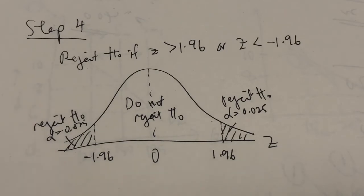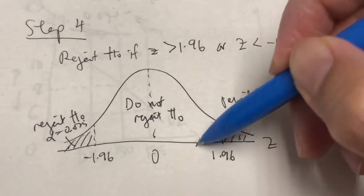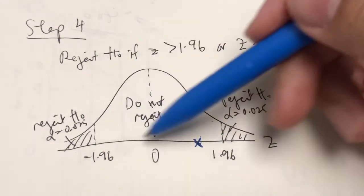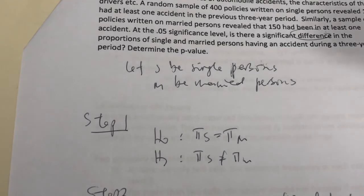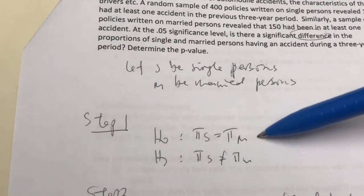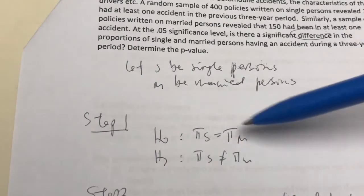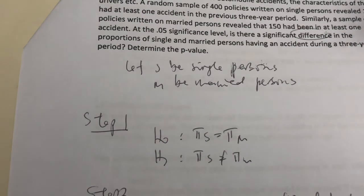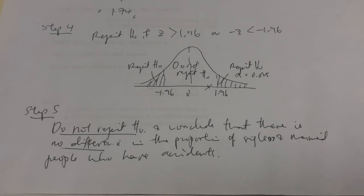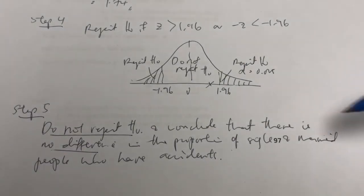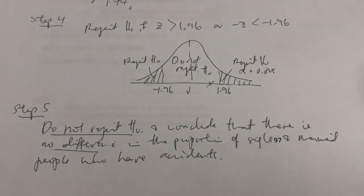Moving on to step five. Our test statistic was 1.74. Since 1.74 lies in the acceptance area, our decision is to not reject the null. Our conclusion is that there is no significant difference in the proportions of single and married people having an accident during a three-year period.